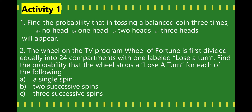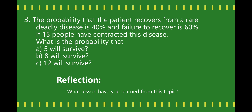For your activity: Number 1 — find the probability that in tossing a balanced coin 3 times, no head, 1 head, 2 heads, and 3 heads will appear. Number 2 — the wheel on the TV program Wheel of Fortune is divided equally into 24 compartments with one labeled 'lose a turn.' Find the probability that the wheel stops on 'lose a turn' for: A) a single spin, B) two successive spins, and C) three successive spins. Number 3 — the probability that a patient recovers from a rare disease is 40% and failure to recover is 60%. If 15 people contracted this disease, find the probability that A) 5 will survive, B) 8 will survive, and C) 12 will survive.